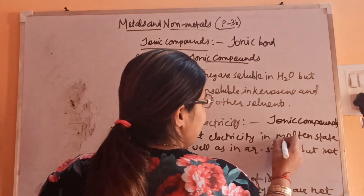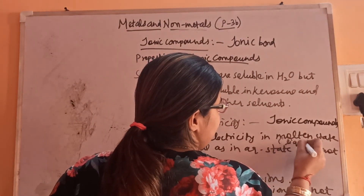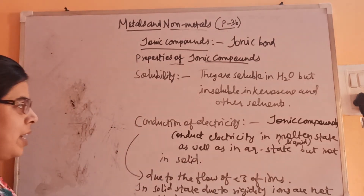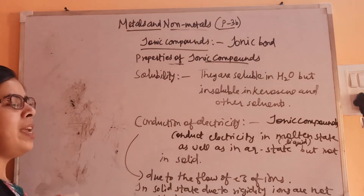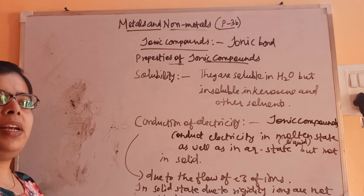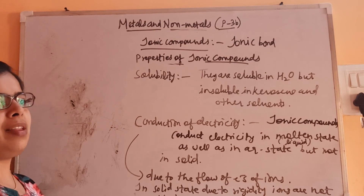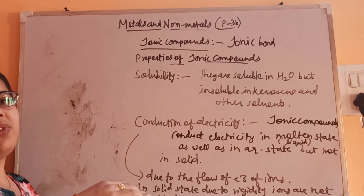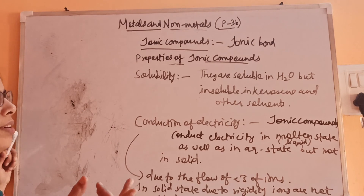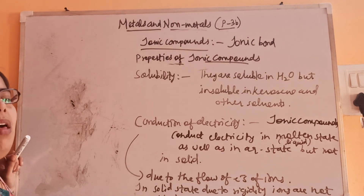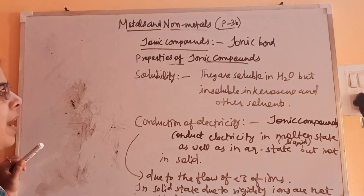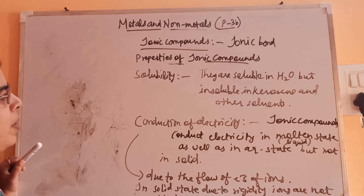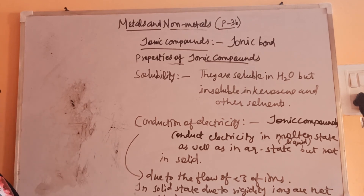Molten state means liquid form. To get that liquid state, we need to provide heat. That heating will break the interaction between the two ions, and then electricity can be conducted. So, due to the movement of the ions, they can conduct electricity — that's why ionic compounds are good conductors in molten or aqueous state. This is all about ionic compounds and their properties.